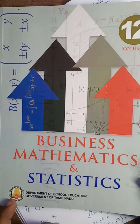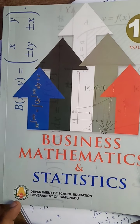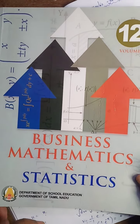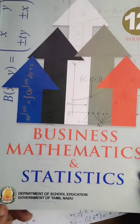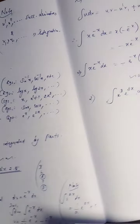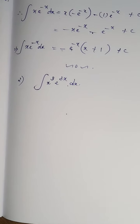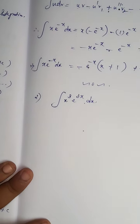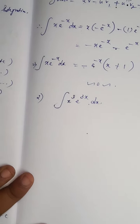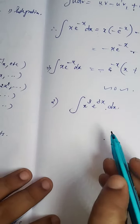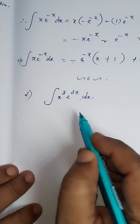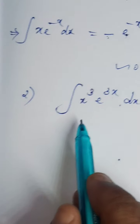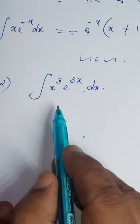Students, this is Sivakumar. 12th standard Business Mathematics and Statistics, Chapter 2, continuation of Exercise 2.5, Problem Number 2: integral of x cubed times e to the power 3x dx. I am going to do this problem by Bernoulli's method.